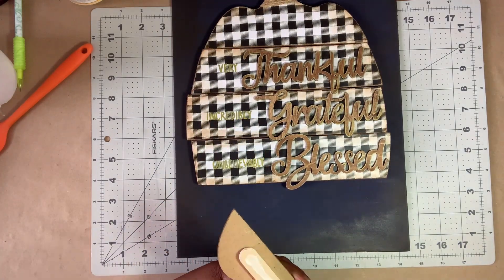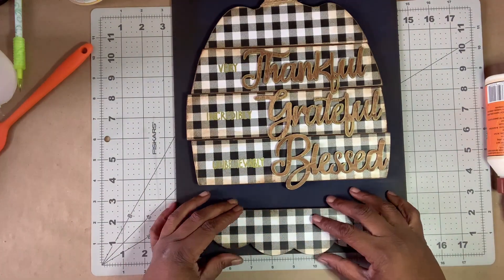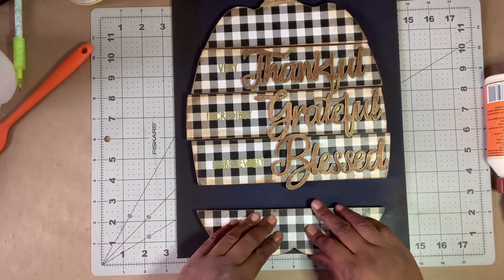Then I assembled the pumpkin on the canvas and glued down the bottom four pieces and set it aside to dry.